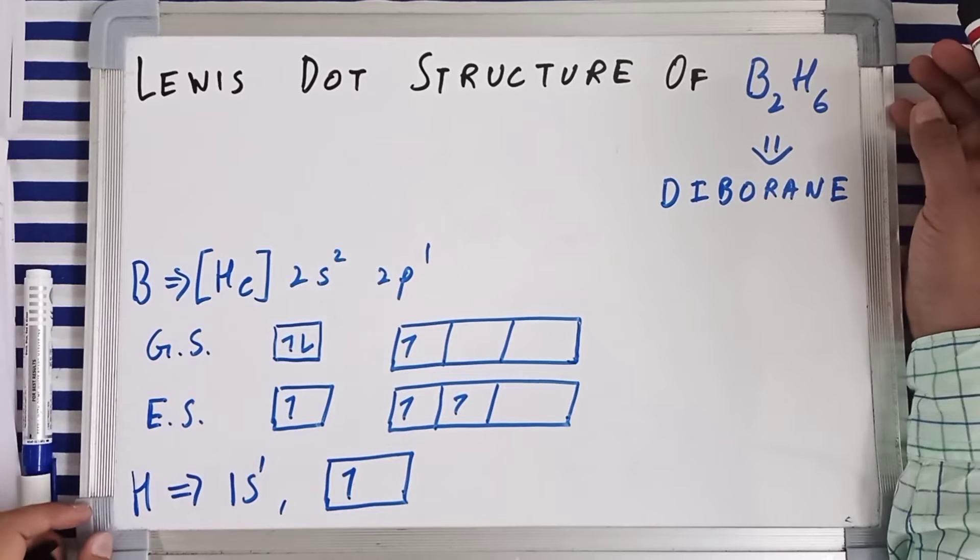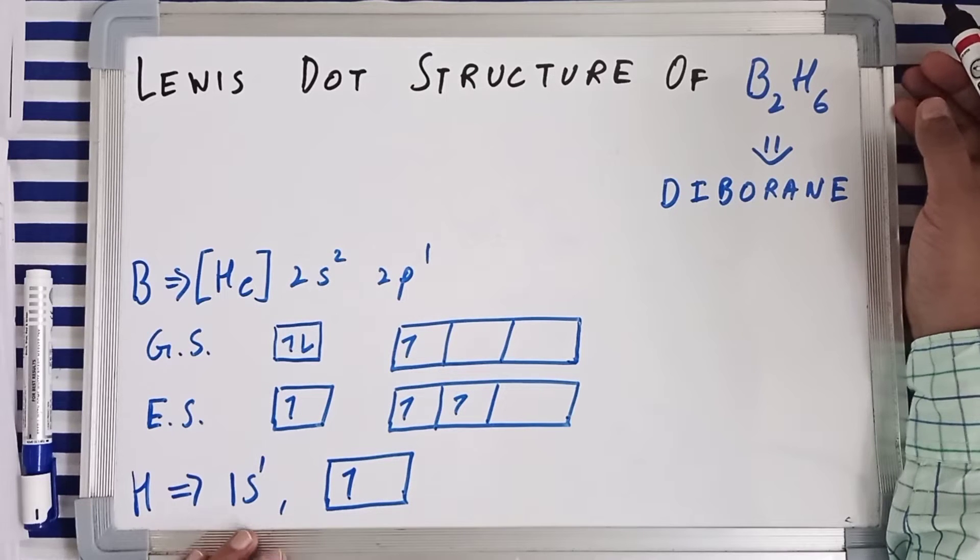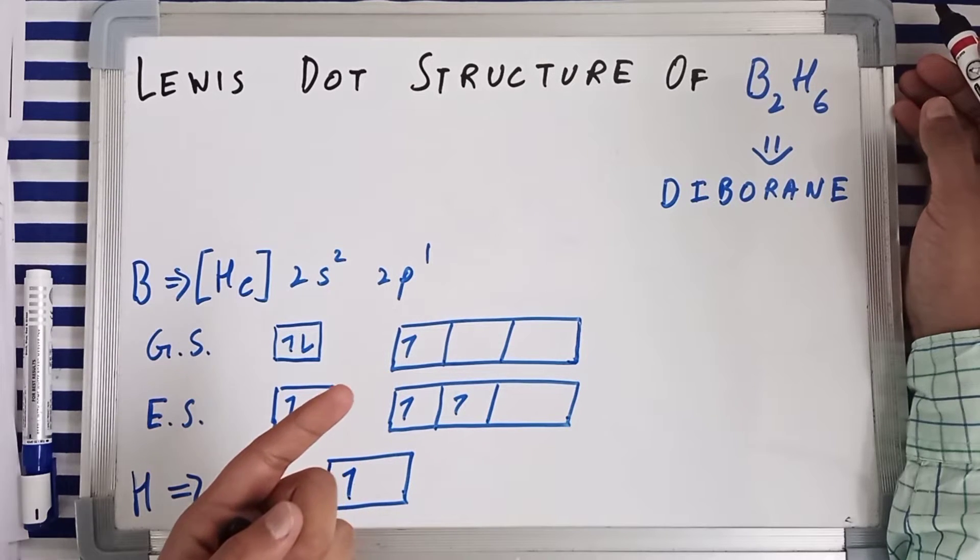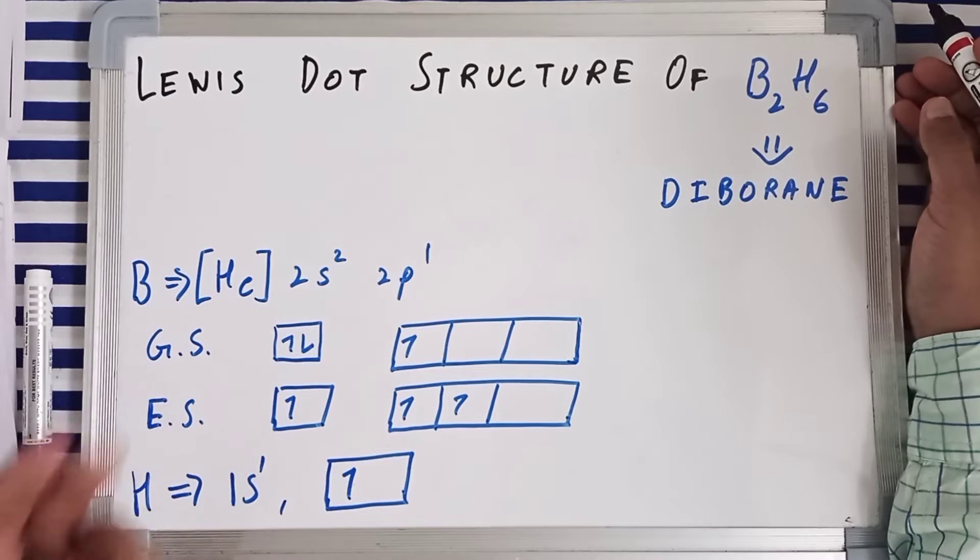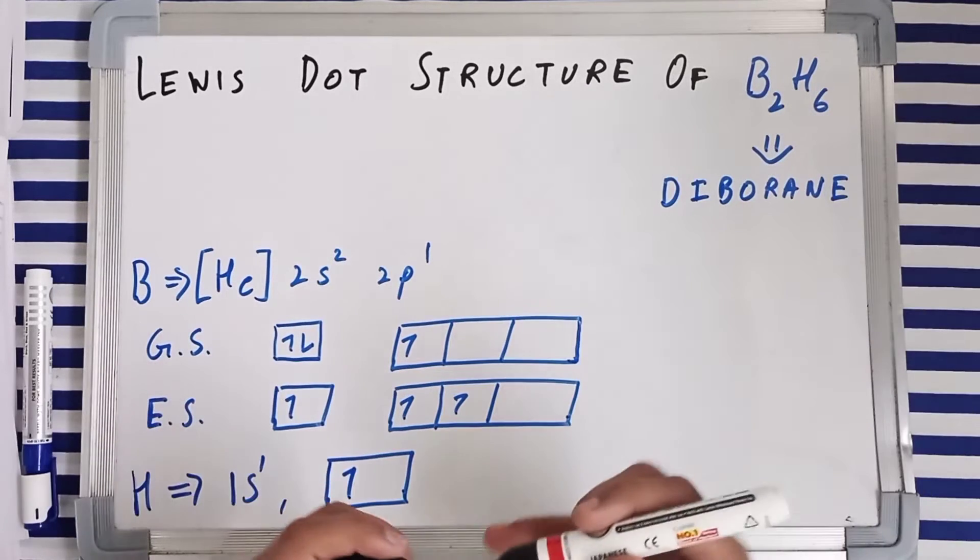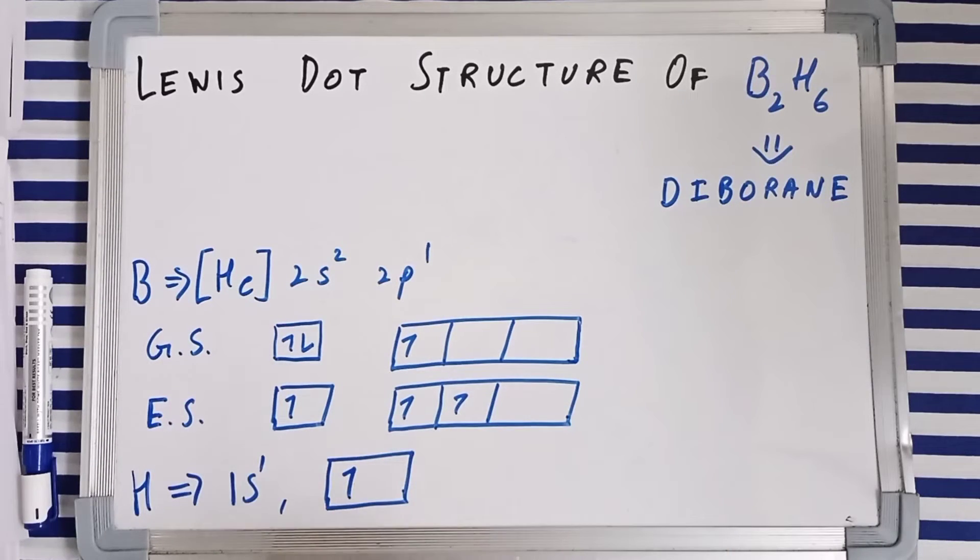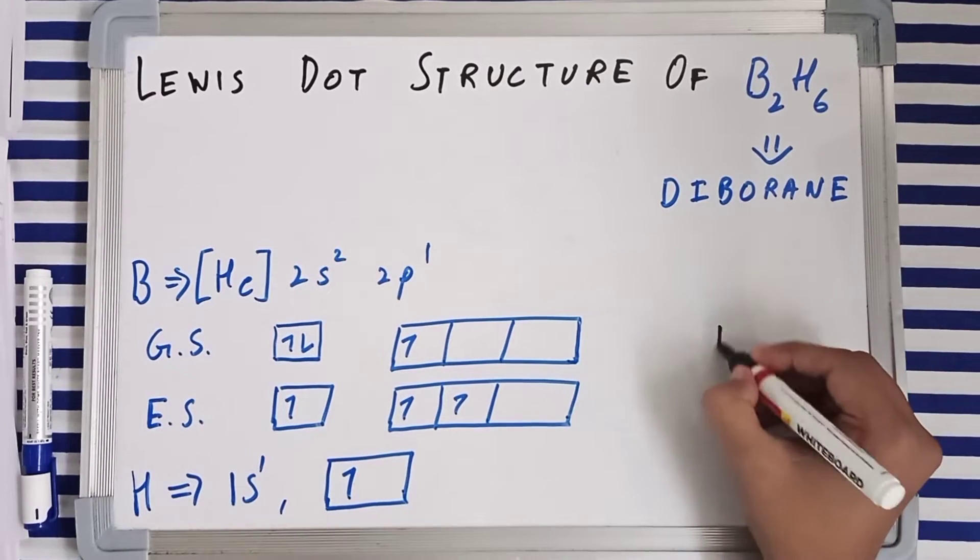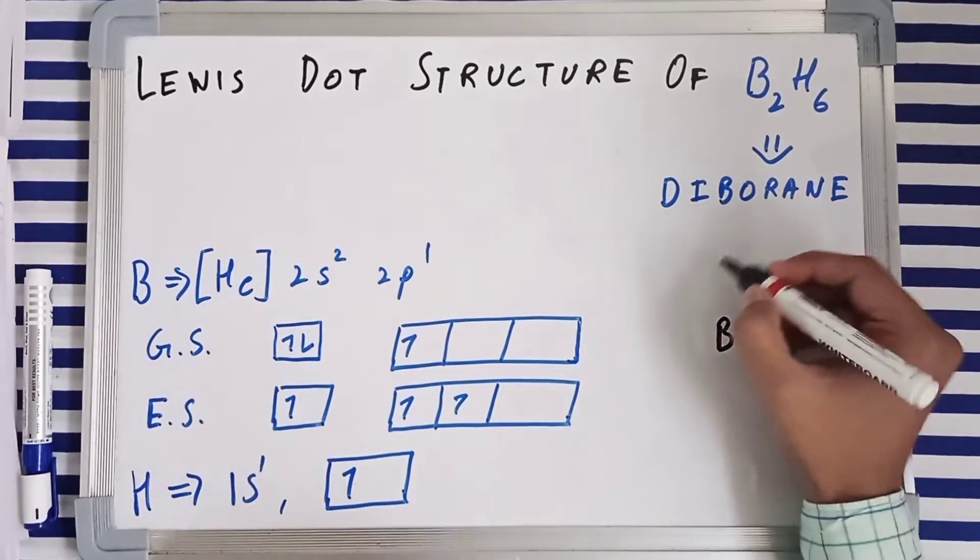Now coming to the electronic configuration of hydrogen, which is very simple, it is 1s¹, the first element of the periodic table, and has just a single unpaired electron. Everybody knows that hydrogen makes just a single bond.